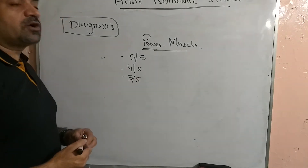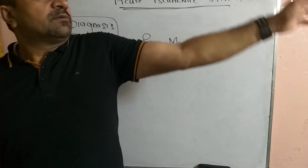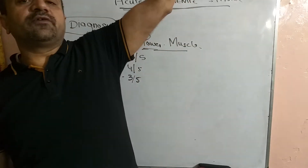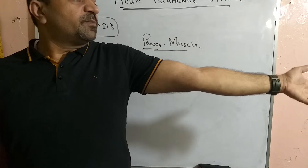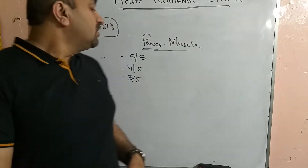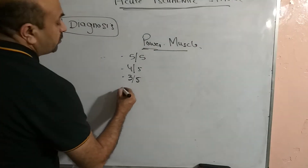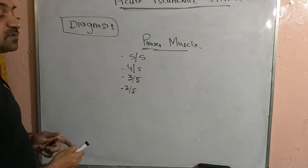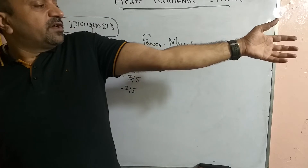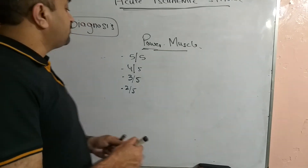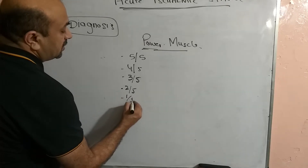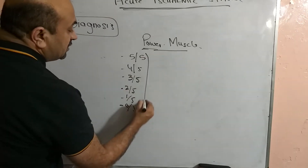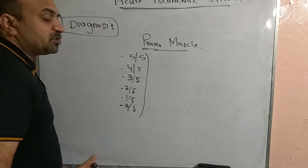If the patient is not able to lift the limb against gravity but can move it horizontally — they cannot defy gravity — we give 2 out of 5. If the patient cannot move the limb at all and there is only flickering movement, we give 1 out of 5. If there is no movement whatsoever, we give 0 out of 5.